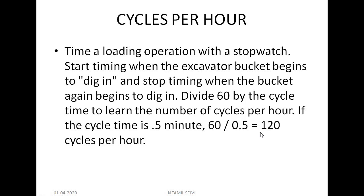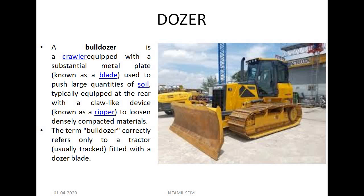Next, we calculate the production output for a bulldozer. A bulldozer is essentially a track tractor — the tractor is called the bull and the blade is called the dozer, hence bulldozer.